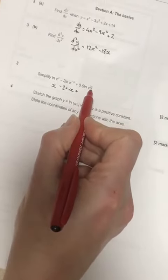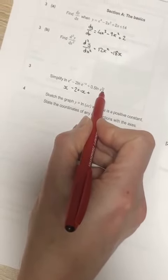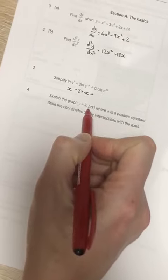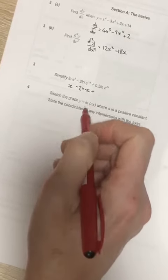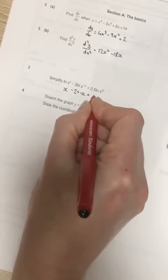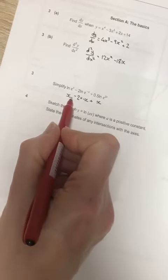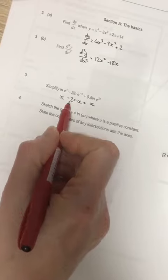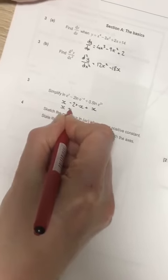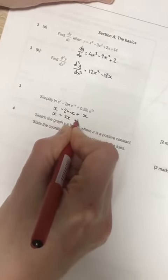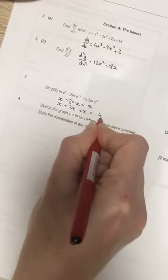So 0.5 times the power there is just x, so we're adding on ln of e to the x, which again is just x. So what have we got? We've got x take away minus 2x, that's plus 2x, plus another x. The answer is 4x.